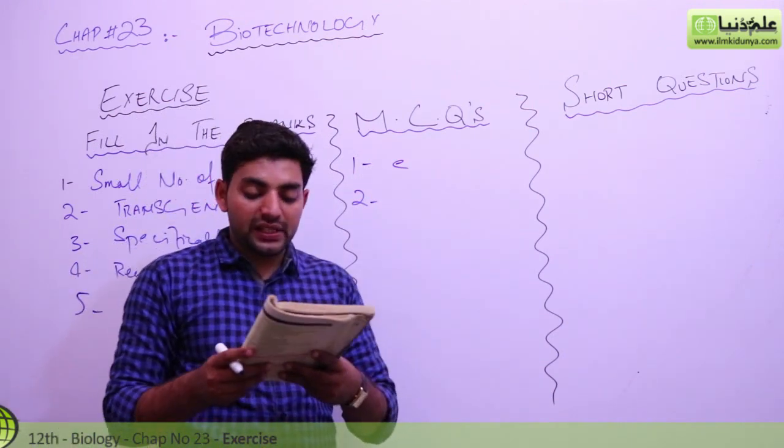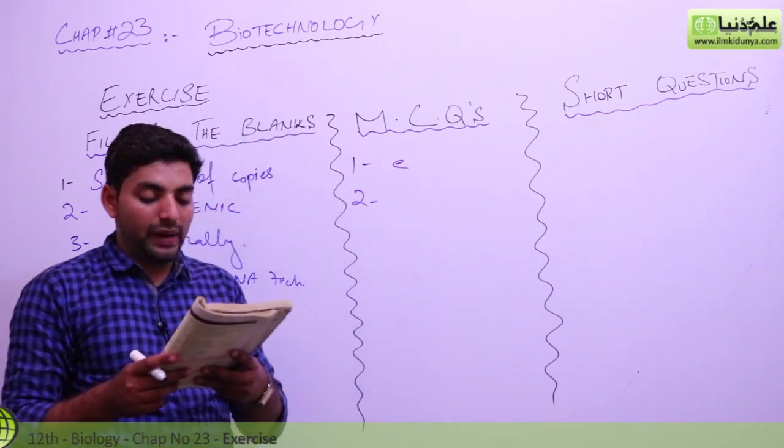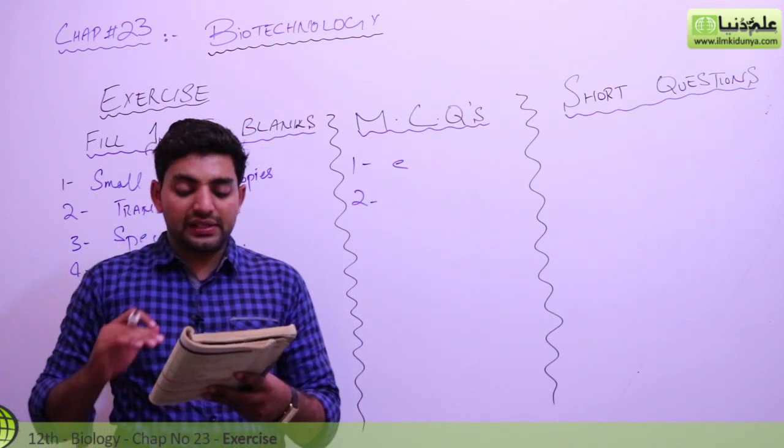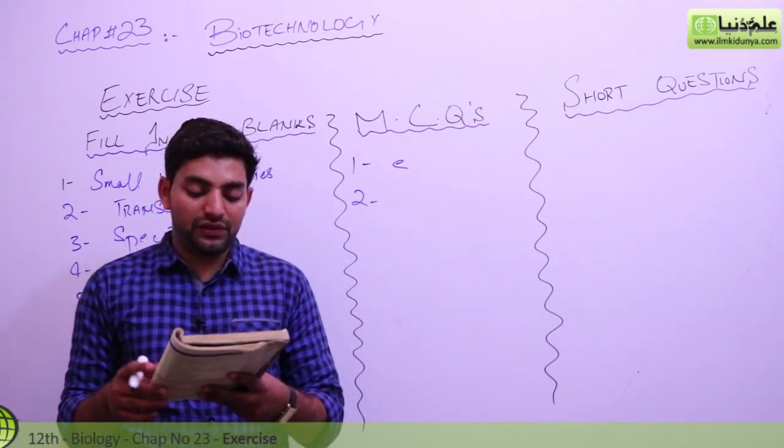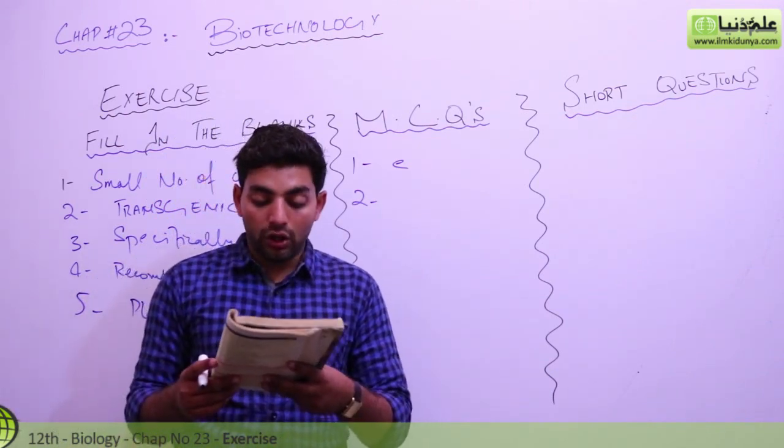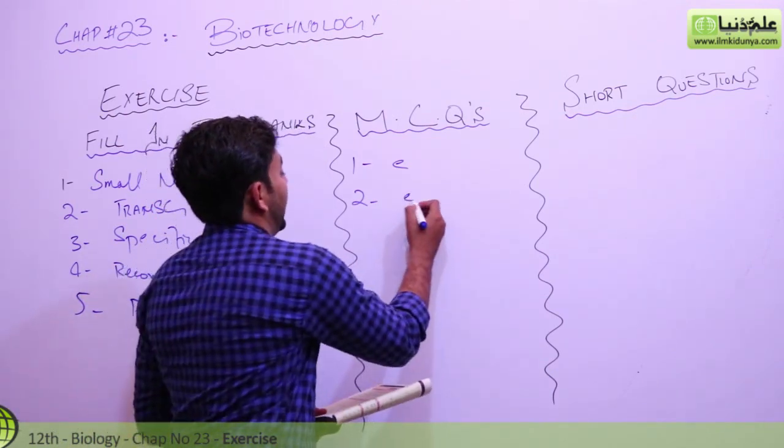Which of these is a benefit to having insulin produced by biotechnology? It is just as effective, it can be mass produced, it is non-allergic, it is less expensive, all of these are correct. So I think all of them are correct, so the answer is E again.